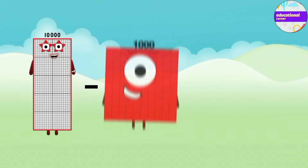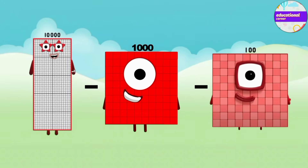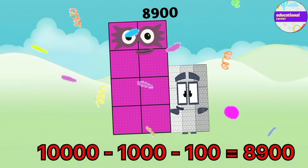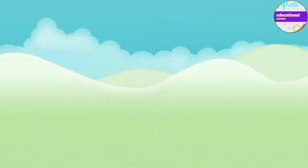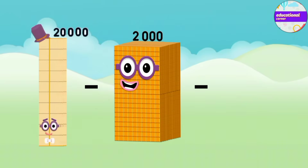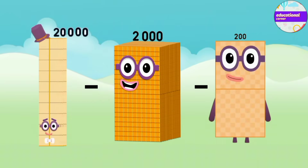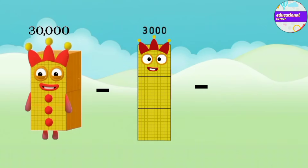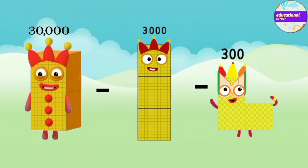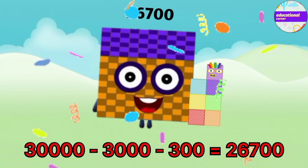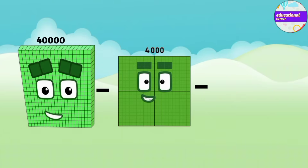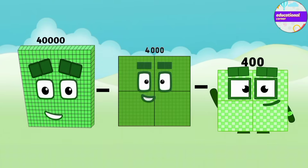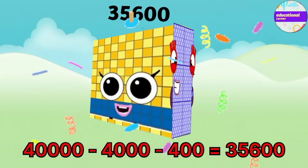10,000 minus 1,000 minus 100 equals 8,900. 20,000 minus 2,000 minus 200 equals 17,800. 30,000 minus 3,000 minus 300 equals 26,700. 40,000 minus 4,000 minus 400 equals 35,600.